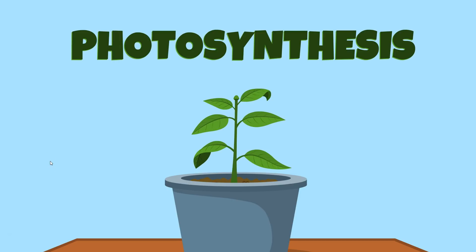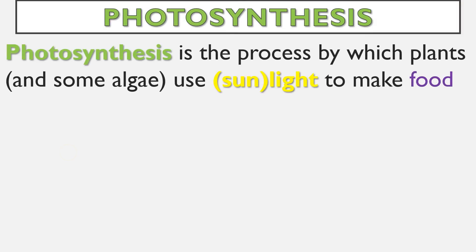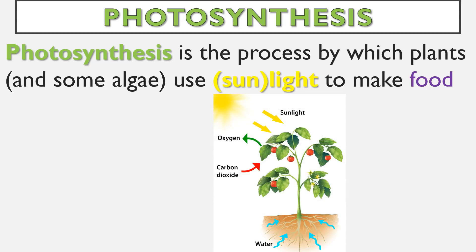In this video we're going to talk about photosynthesis, maybe the most important equation that takes place for life on Earth. Photosynthesis is the process by which plants, and some algae, are going to be using sunlight to make food — not necessarily always sunlight, but pretty much any sort of light.